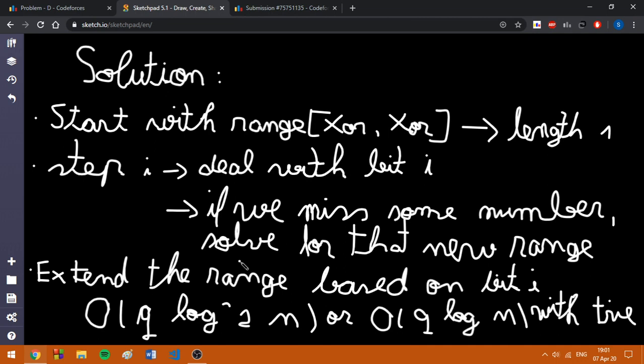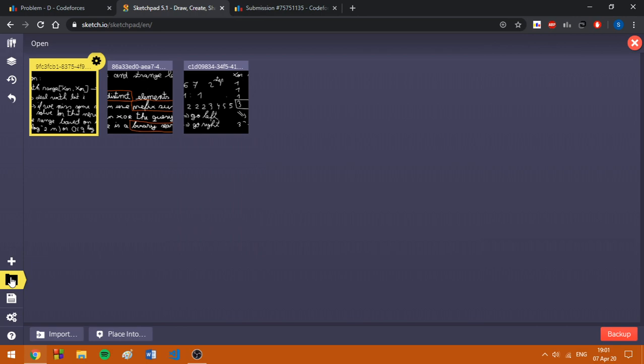This idea gives us an O(q log² n) solution if you decide not to use any other structure, or if you want to exercise your tree abilities, the complexity will end up being O(q log n). Now I am going to explain for an example how does this work.